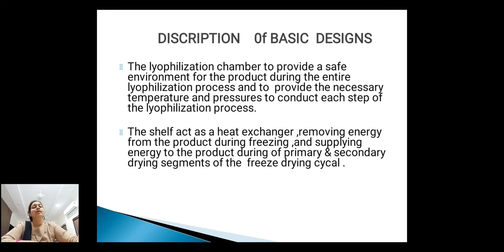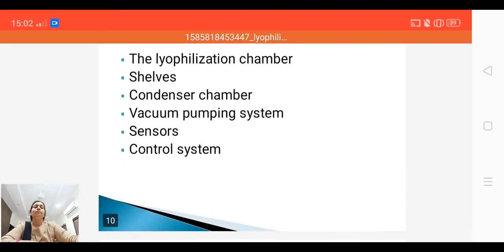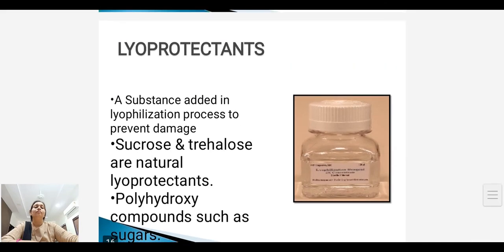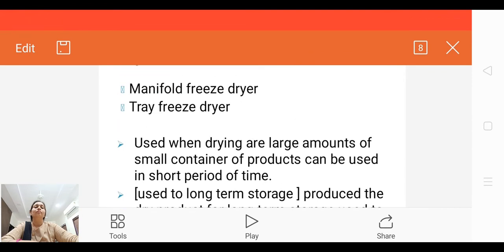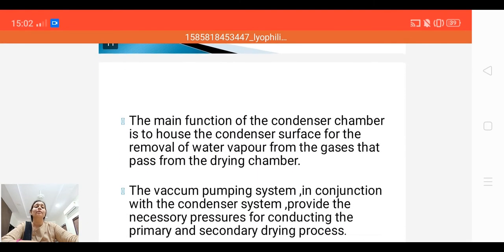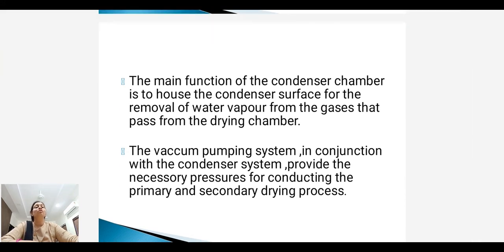The shelf acts as a heat exchanger, removing energy from the product during freezing and supplying energy to the product during primary and secondary drying segments of the freeze drying cycle. The main function of the condenser chamber is to house the condenser surface for the removal of water vapour from the gases that pass from the drying chamber. The vacuum pumping system, in conjunction with the condenser, provides the necessary pressure for conducting primary and secondary drying.